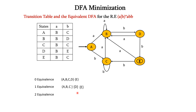Next, we have to construct the two equivalents. For two equivalents, we have to consider the sets from one equivalents. Again, we have to compare AB. If we check for AB, we have the transitions BC and BD for input A and B, so BCD. BC is available but D is not available. So, we can say that A and B are not two equivalent. So, we check for AC next. For AC, it has BC and BC for input A and B. Both B and C are available here. So, we can say that A and C are equivalent, and we can have AC as one set.